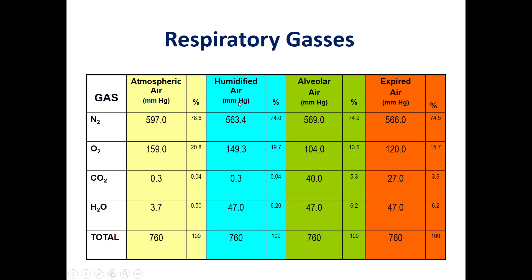In the humidified air, as air passes through our air ducts it is humidified, so the partial pressure and percentages of these gases change. For example, nitrogen will drop to 74%, oxygen will also have a slight drop, whereas CO2 will stay the same, and water vapor will increase from 0.5% to reach 6.2%.